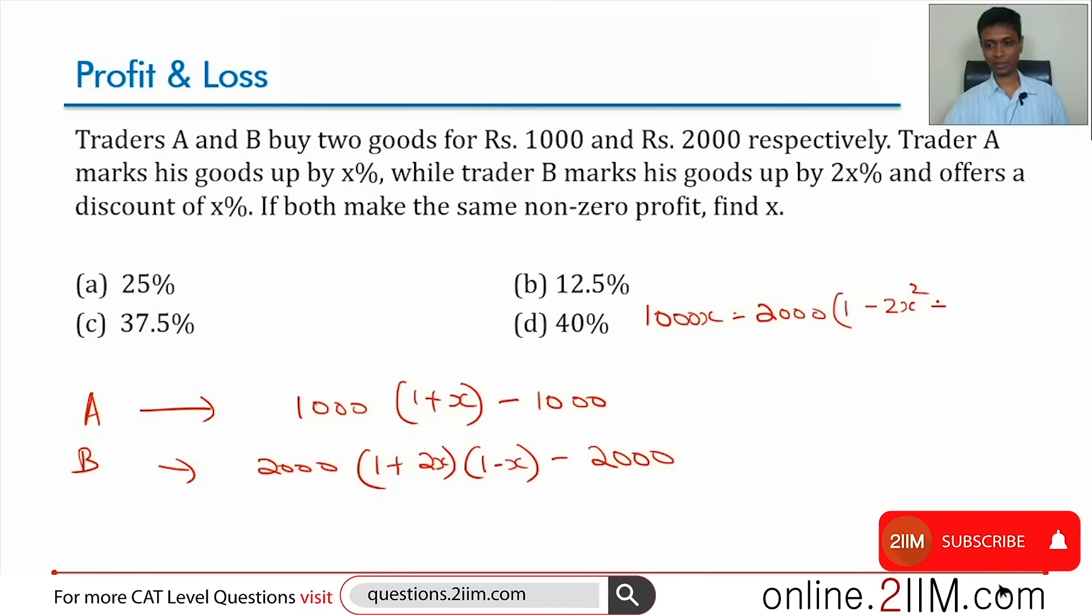...plus X minus 2000. So 1000X equals 2000 minus 2000 - that just disappears. It's 2000 into -2X², which is -4000X² plus 2000X. Bring this to the other side...